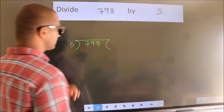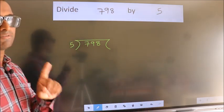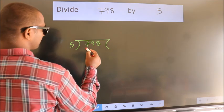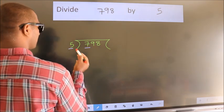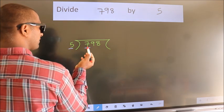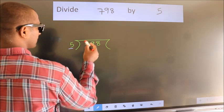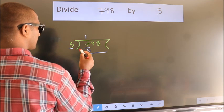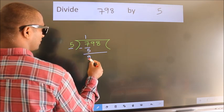This is step 1. Here we have 7, and here 5. A number close to 7 in the 5 table is 5 once, which is 5. Now we subtract and get 2.